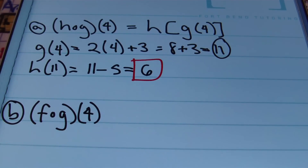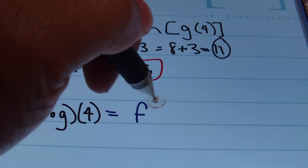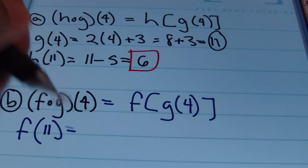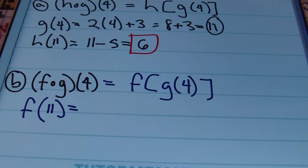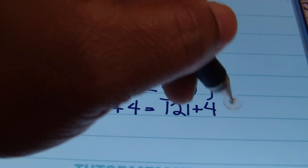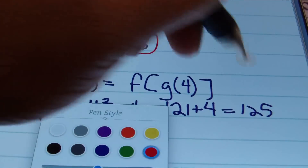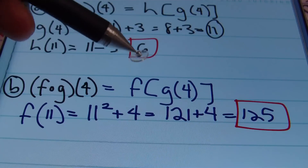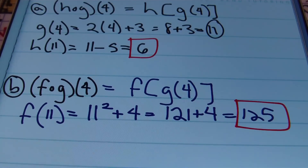In part B, we have F composite G of 4, meaning F of G of 4. We already know that G of 4 is 11 — we just found that out. So we want F of 11. F of 11 is 11 squared plus 4, which gives 121 plus 4, equaling 125. That's the answer. We plug 11 into F: 11 squared is 121, add 4, and end up with 125.